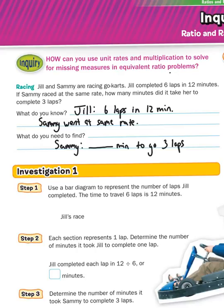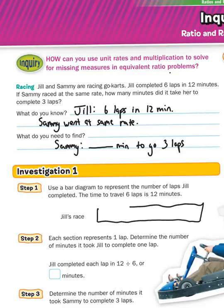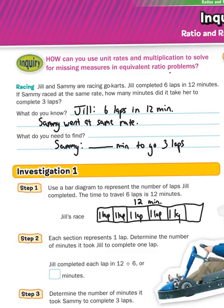We're going to use a bar diagram. I erased the bar diagram from your book, so watch me draw it. It says use a bar diagram to represent the number of laps Jill completed — the time to travel six laps is 12 minutes. So I'm going to draw a rectangle that represents the 12 minutes Jill went. She went six laps, so I'm going to split this into six sections — half, then each half into three: one, two, three on the left, three on the right. That's six laps. Here is this bar: in 12 minutes, the whole bar, she did six laps — that's what each of those little boxes is.